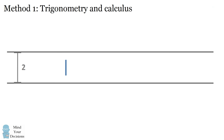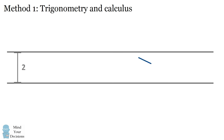One way to solve this problem involves trigonometry and calculus. We're going to consider all the different ways that this needle of length one could fall on the floor. It could fall in different vertical positions, but it could also fall at different angles. In this method, we're going to consider all the different vertical positions and angles and compute the proportion at which the needle intersects the horizontal line.